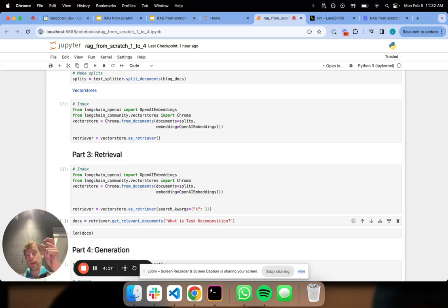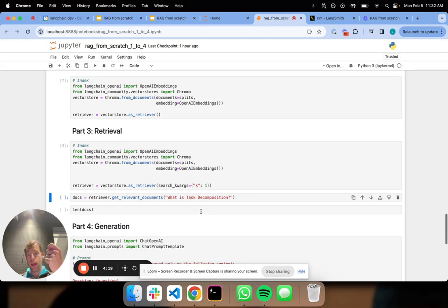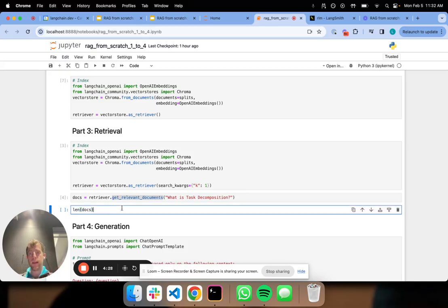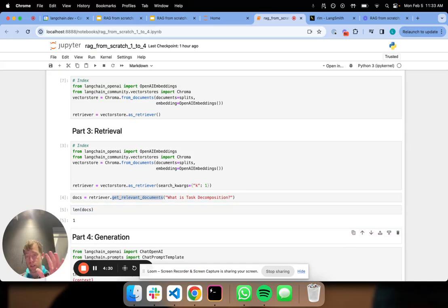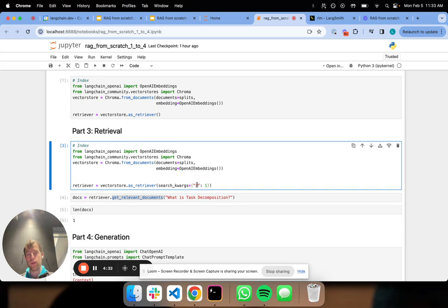Now what's nice is I ask a question, what is task decomposition? This is related to the blog post. And I'm going to run get relevant documents. So I run that. And now how many documents do I get back? I get one as expected based on K equals one. So this retrieved document should be related to my question.